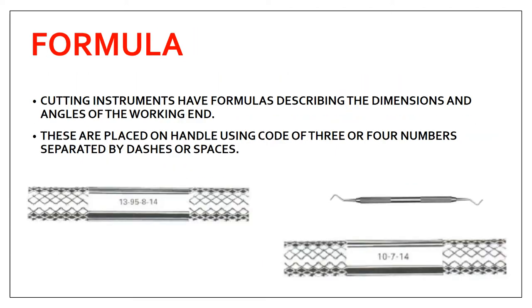The next very important thing is the instrument formula. This is very commonly asked as a short answer question and in vivas, so you should know exactly what the instrument formula is. Cutting instruments have a formula describing the dimensions and angle of the working end. Each instrument has numbers written on the handle — that is the instrument formula, placed using a code of three or four numbers separated by dashes or spaces.